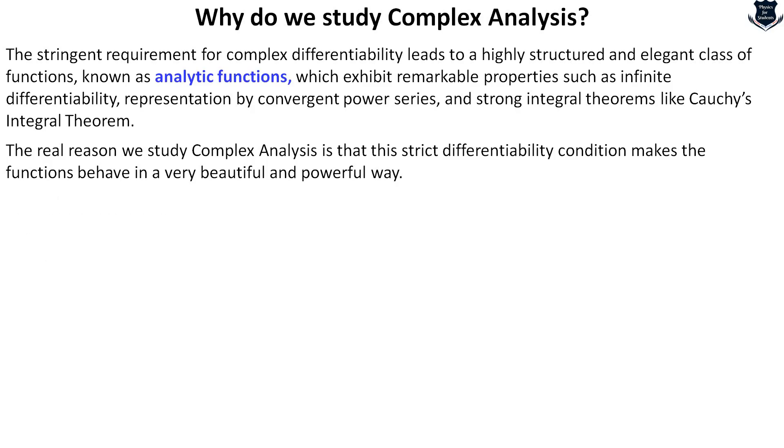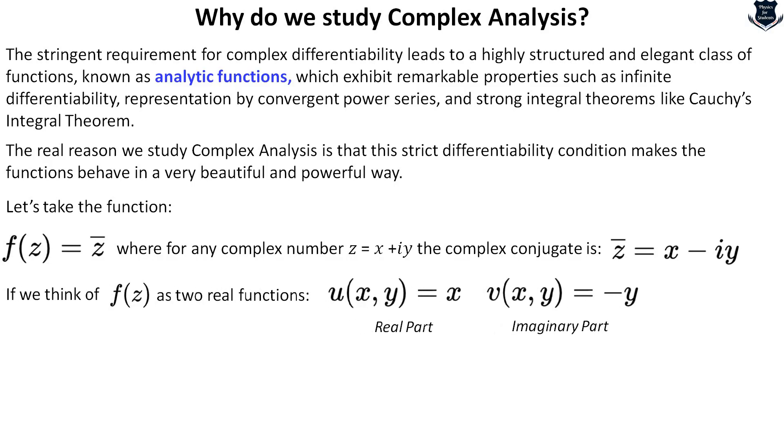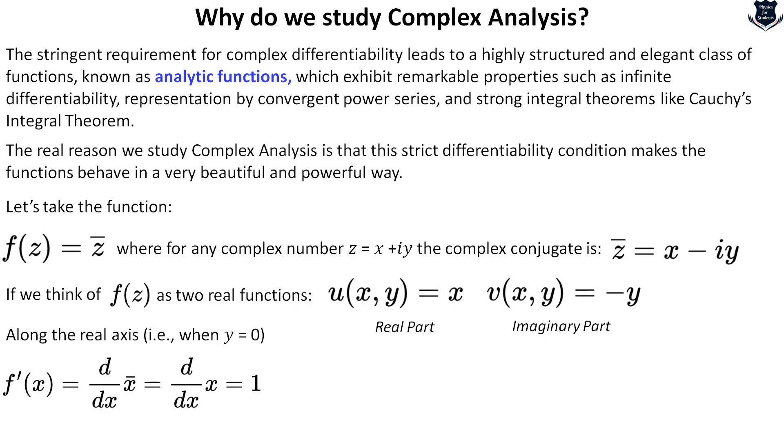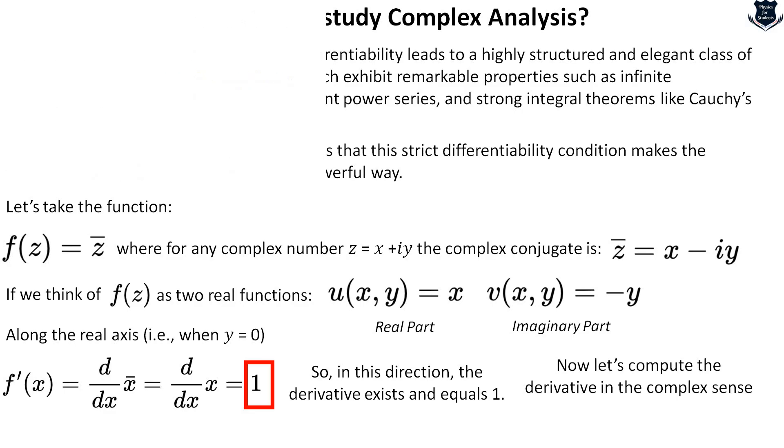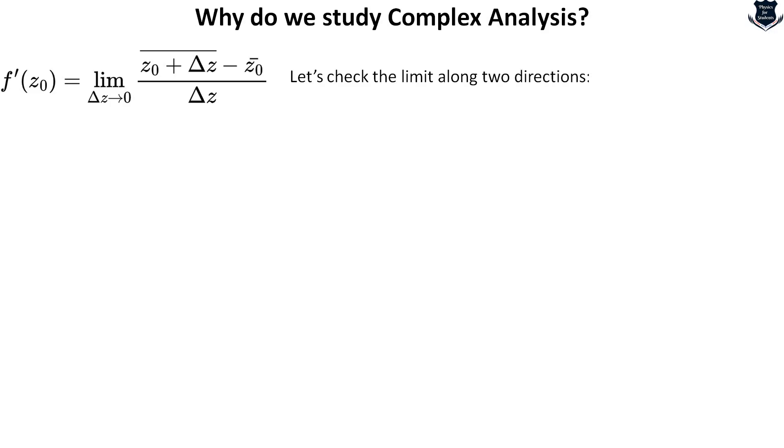I will now give you a simple example mathematically to show you this power. If we take this function where for any complex number z equals x plus iy, we take the complex conjugate of this. If we think that f of z has two functions, one is the real part and another is the imaginary part. Along the real axis when y equals 0, we get something like this and it shows the value 1. This is important because this 1 denotes the direction and derivative exists and equals 1.